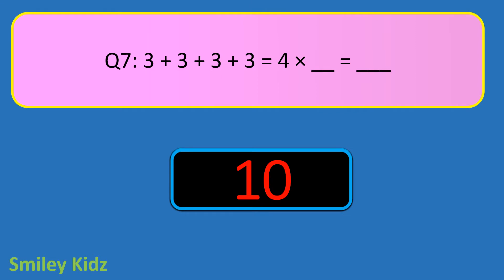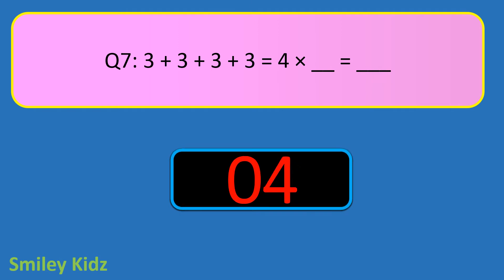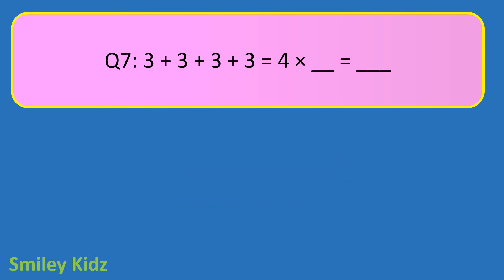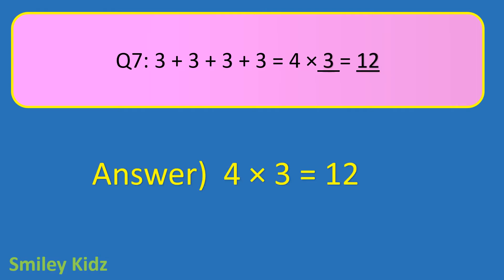Question number 7. 3 plus 3 plus 3 plus 3 is equal to 4 times blank, is equal to blank. Your time starts now. And your time is up. The right answer is 4 times 3 is equal to 12. 3 plus 3 plus 3 plus 3 is equal to 4 times 3, which is 12.